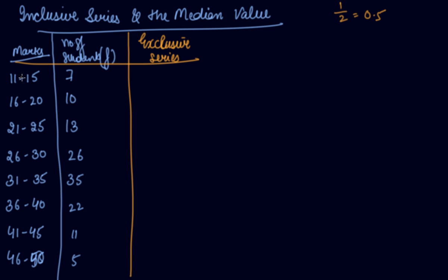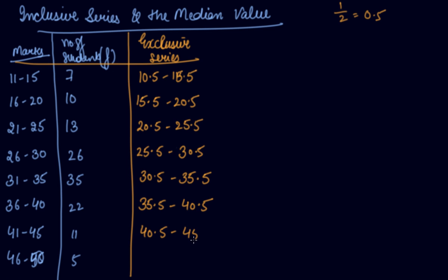So the exclusive series we found was 10.5 to 15.5, 15.5 to 20.5, 20.5 to 25.5, 25.5 to 30.5, then 30.5 to 35.5, 35.5 to 40.5, 40.5 to 45.5, and 45.5 to 50.5. So in this way we have converted it into the exclusive series and the frequency will be the same.